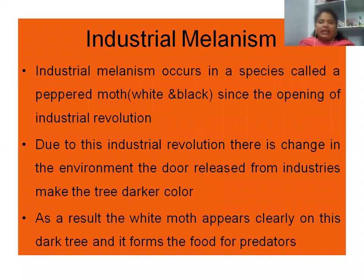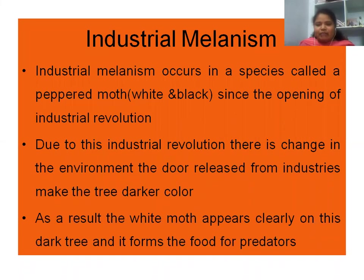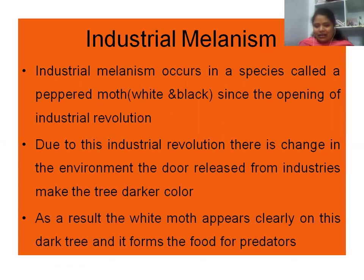Another contribution is industrial melanism, which occurs in a moth called the peppered moth — white and black. With the onset of the industrial revolution, pollution from industries turned tree bark darker in color. As a result, the white peppered moth became clearly visible against the dark trees, making it easy prey for predators. Due to the industrial revolution, there was a change in the environment — the soot released from industries made trees darker in color, and the white moths were clearly visible to predators.